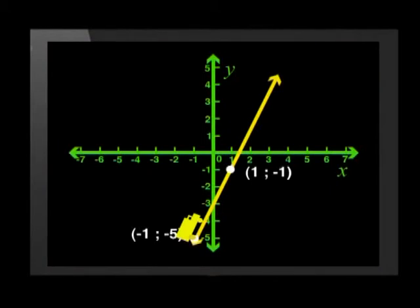Let me show you how to measure how steep the slope is by finding the gradient of this graph. Imagine you are walking on the graph. You walk from this point, negative 1, negative 5, to this point, 1, negative 1.